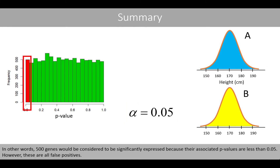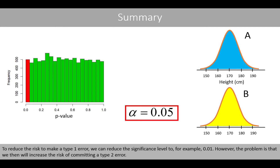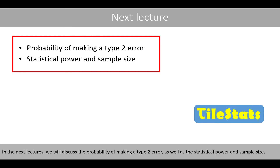In other words, 500 genes would be considered significantly expressed because their associated p-values are less than 0.05. However, these are all false positives. To reduce the risk of committing a type 1 error, we can reduce the significance level to, for example, 0.01. However, the problem is that we then increase the risk of committing a type 2 error. In the next lectures, we'll discuss the probability of making a type 2 error as well as statistical power and sample size.